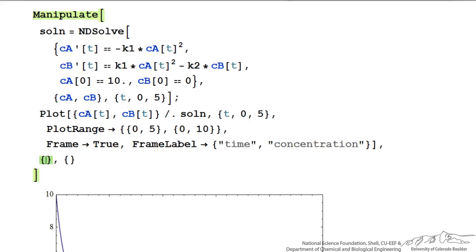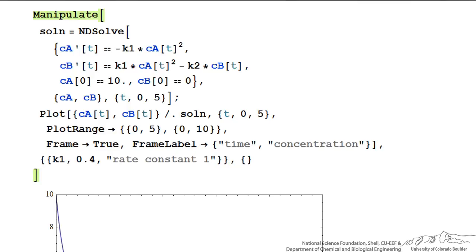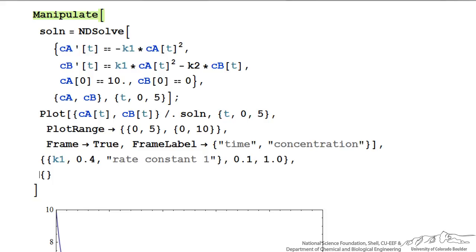For k1, within a set of curly brackets — since whenever we have a list of things we use curly brackets — k1 is the variable we want to change in the Manipulate command. We want it to start at a value of 0.4 when first run, and then we add a label in quotes so we know what we're changing. We label it 'rate constant 1' to make it clear. The final thing we need is the range where we want to change k1, and we're going to change it from 0.1 to 1.0. Then I'll put the same information for k2.